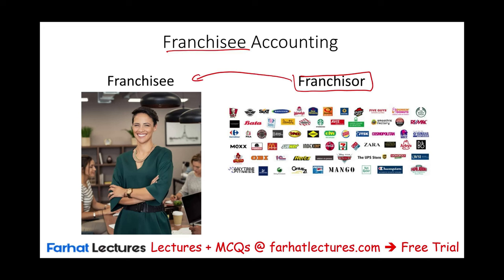Let's review real quick who is the franchisor and who is the franchisee. The franchisor will be a company like Dunkin Donuts, and the franchisee is some motivated entrepreneur that wants to start a business but would rather use an established company name. Companies like Dunkin Donuts, McDonald's, Burger King, or KFC give you the right to operate their business, but you have to pay a fee for that.